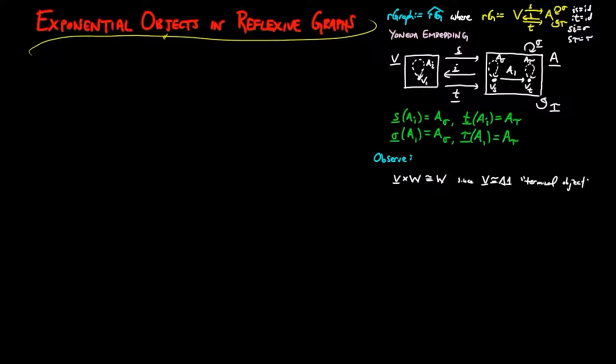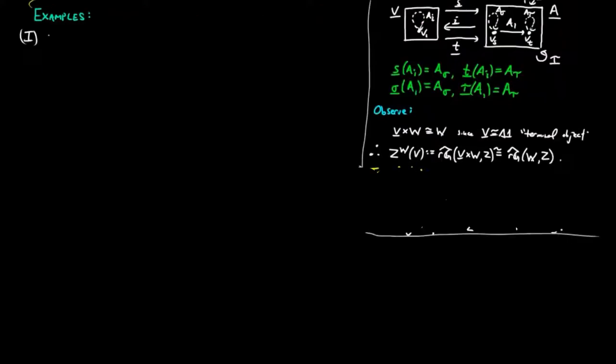Therefore, the vertex set of Z to the W is a set of morphisms from W to Z. For example, let W be the reflexive graph with vertices A, B, and C, and non-distinguished arcs alpha and beta, and Z to be the reflexive graph with three vertices 0, 1, 2, and the following arc set.